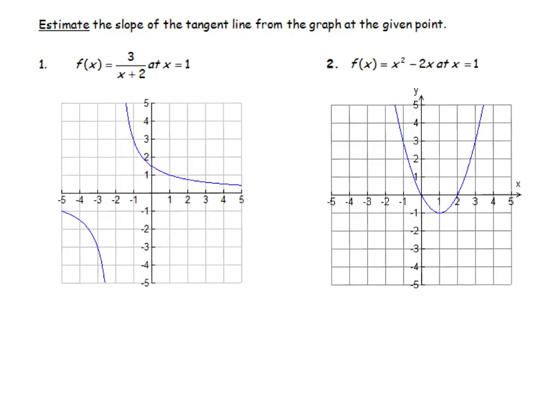Now that we know what a tangent line is and we know the importance of finding the slope of the tangent line, let's start by just looking at a few graphs and trying to estimate the slope of the tangent line. In the first example, we've got our function f(x) = 3/(x+2).